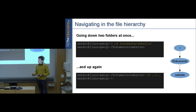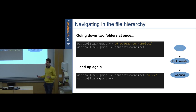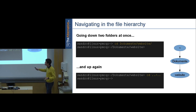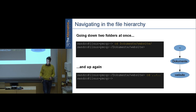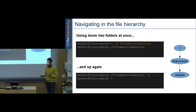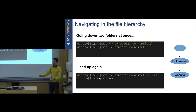You can jump several directories at once. If you know there's a folder called 'website' inside 'documents', you don't need two separate cd commands — just type 'cd documents/website'. This is a relative file path, meaning relative to where you are right now. An absolute file path starts with a slash, meaning from root — it goes to exactly that folder no matter where you currently are.